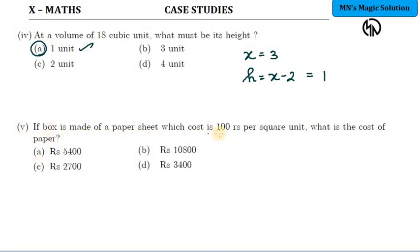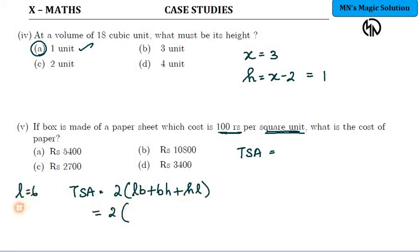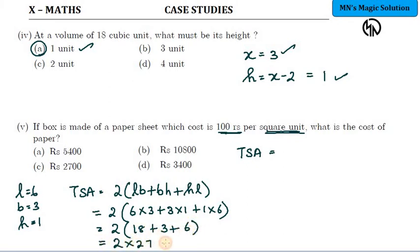Fifth subdivision: if box is made of a paper sheet which costs rupees 100 per square unit, what is the cost of paper? Total paper cost required for making that box. Already we found the TSA expression. TSA formula is 2 into LB plus BH plus HL. We already found length as 6, breadth as 3, and height as 1 unit. Just now we did this. Substitute: 6 into 3 plus 3 into 1 plus 1 into 6. This is 2 times 18 plus 3 plus 6. 3 plus 6 is 9, that gives 27. So 2 into 27 which is nothing but 54 square units. This will be the TSA.